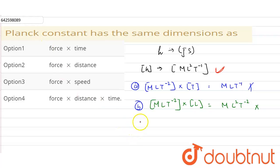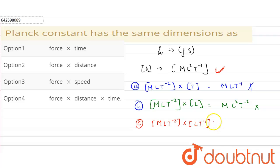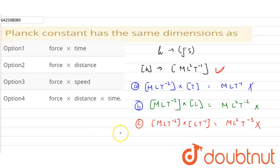Checking the third option: force into speed. The dimension of force is MLT⁻², and speed has dimension LT⁻¹. Multiplying these gives ML²T⁻³. This does not match ML²T⁻¹, so the third option is also wrong.